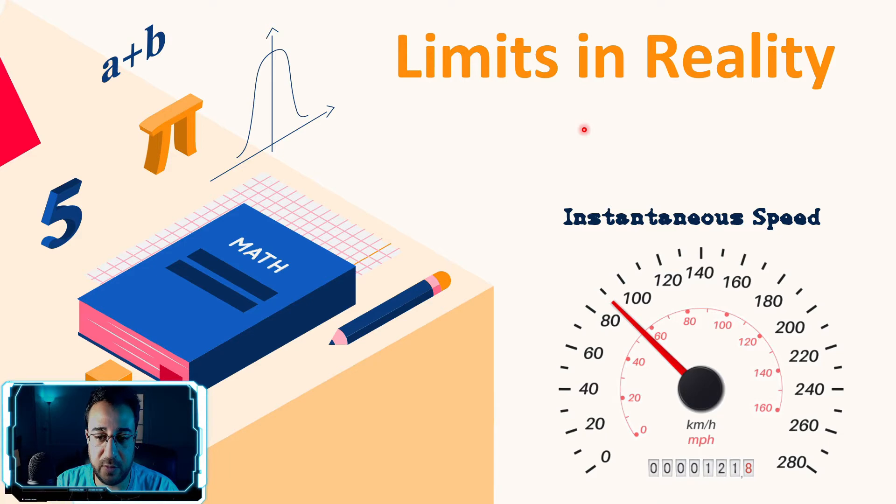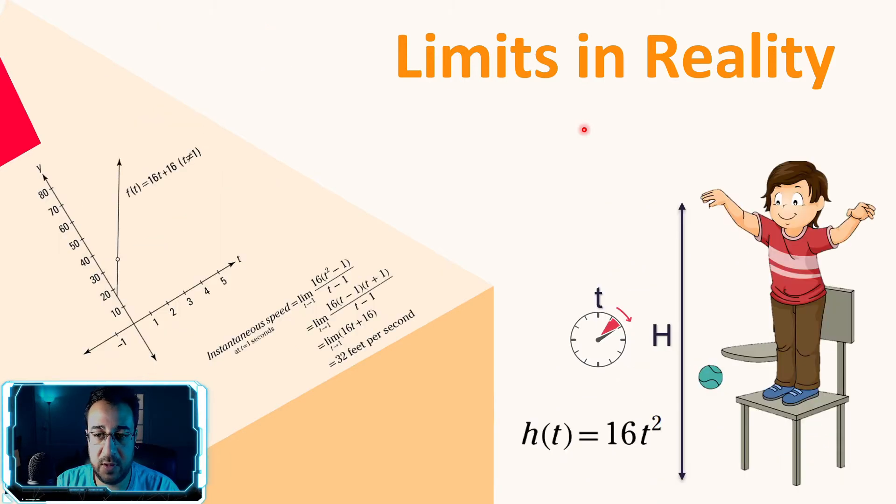Moving to the next slide, if we imagined a kid holding a ball at a certain height, he wants to drop that ball to the ground with a height of h and he's holding a timer for a time annotated as t. Then at second one, what would be the speed, the instantaneous speed of that ball?